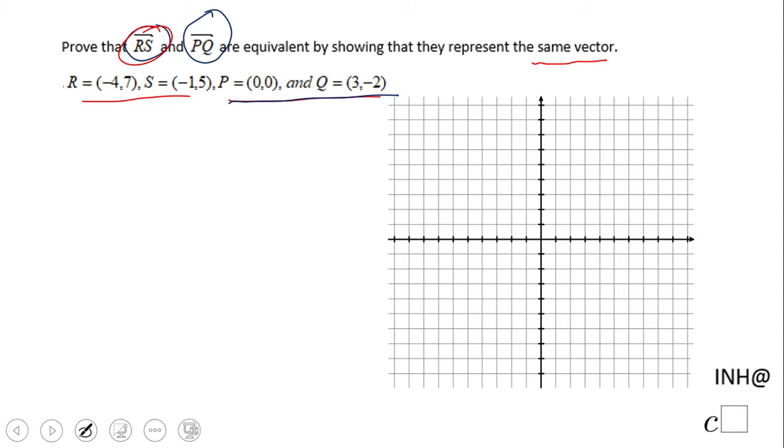I'm going to start with R and S. Point R is at (-4, 7): one, two, three, four left, one, two, three, four, five, six, seven up. This is point R. Point S is at (-1, 5): one left, one, two, three, four, five up. This is point S.